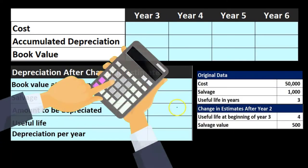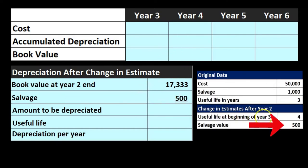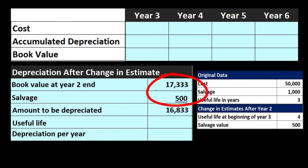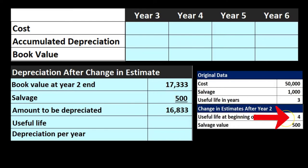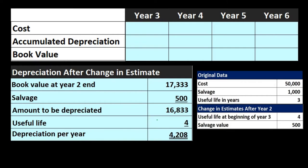To calculate the new depreciation, we use essentially the same straight-line approach, but start with the book value of $17,333 instead of the original cost. We subtract the new salvage value of $500: $17,333 minus $500 equals $16,833. Dividing $16,833 by the four remaining years gives us annual depreciation of $4,208 per year for the next four years.